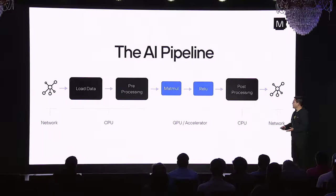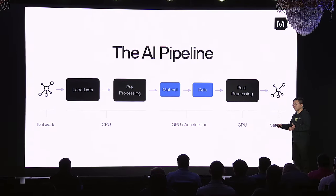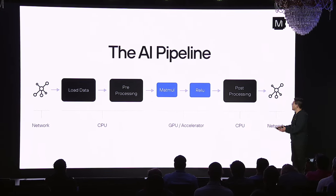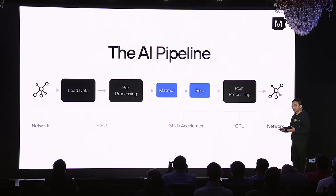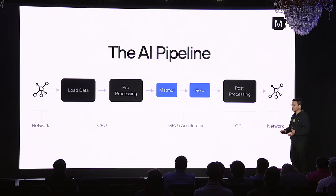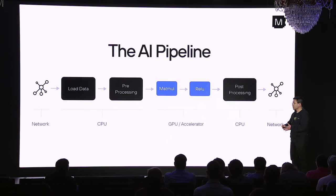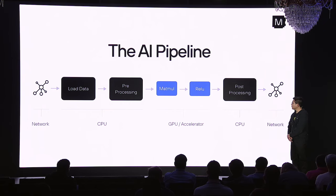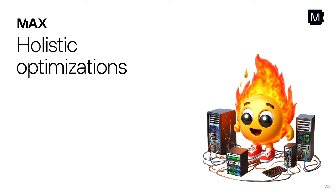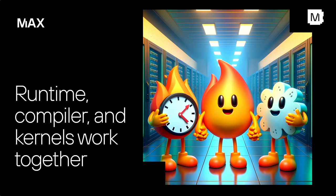First, let me mention that the AI pipeline actually goes beyond just the models — it also includes loading the data, pre-processing the data, and post-processing the data. So the goal of Max here is not just to optimize the models; it's to optimize the entire AI pipeline end-to-end. To do that, we develop holistic optimizations — in Max, the runtime, the compiler, and the kernels work together collaboratively.